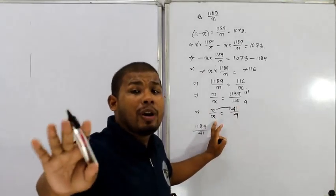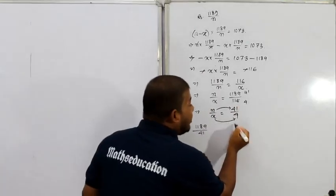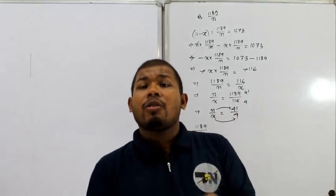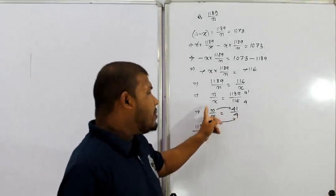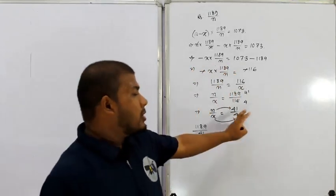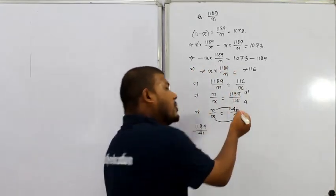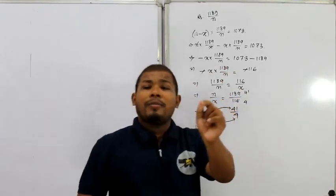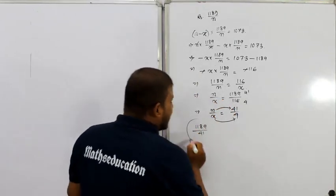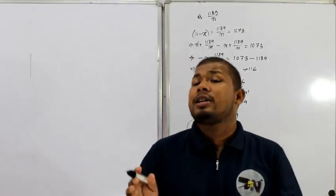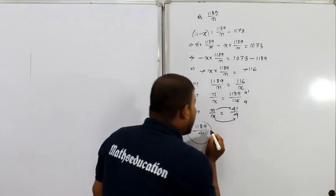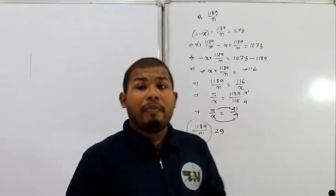We found that x days the worker missed work. If the minimum days are 41, then x — the absent days — will be 4. From the ratio, we can directly determine the rate. Since the minimum number of days is 41, the daily wage will be 1189 divided by 41. The answer we get is 29 — so the maximum daily wage is 29 rupees. The minimum number of days of work is 41, and the daily wage comes out to 29 rupees per day.